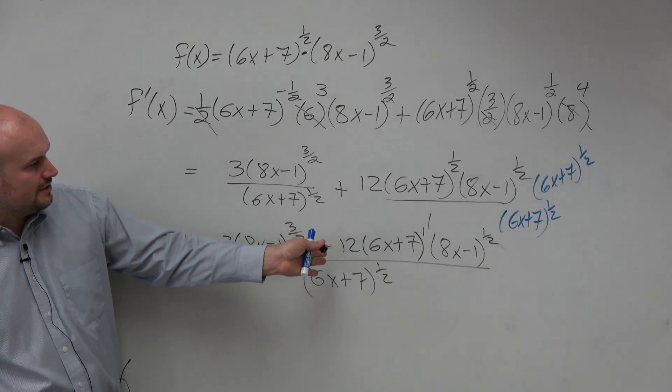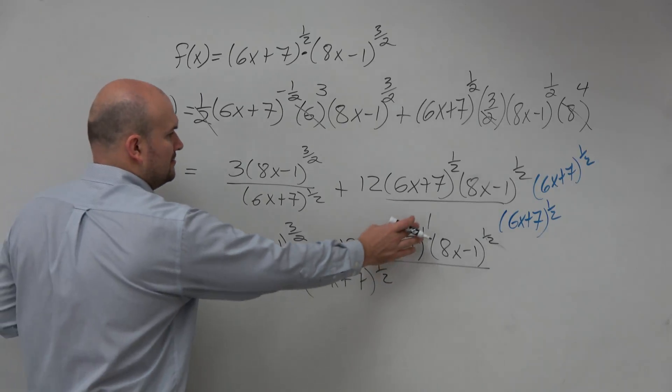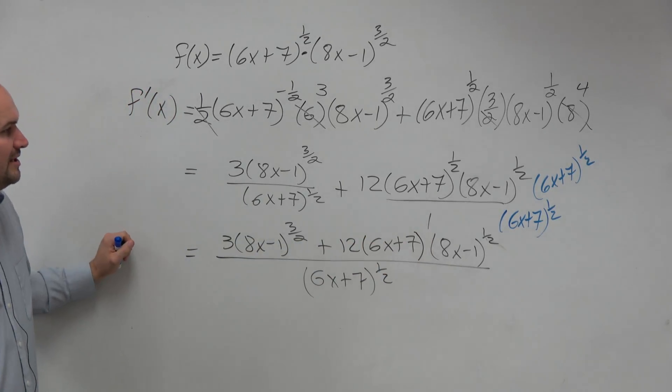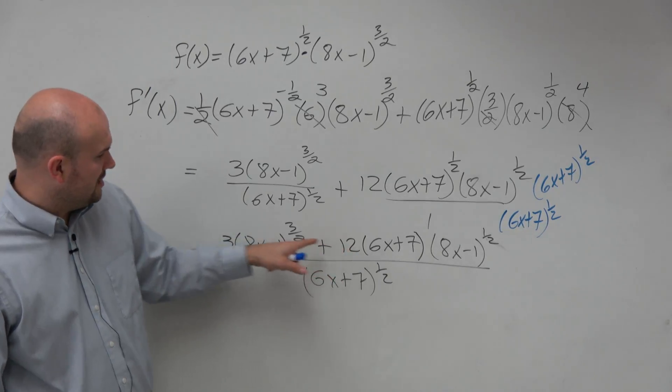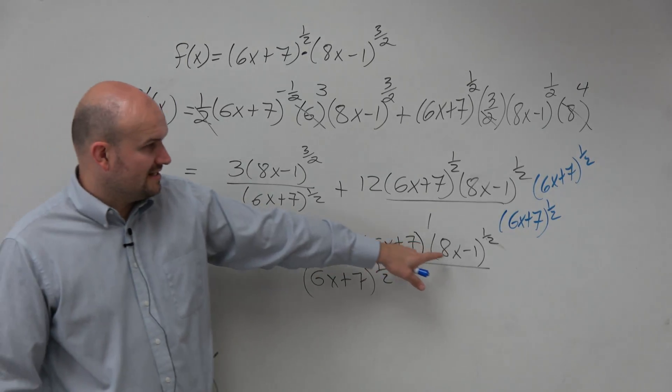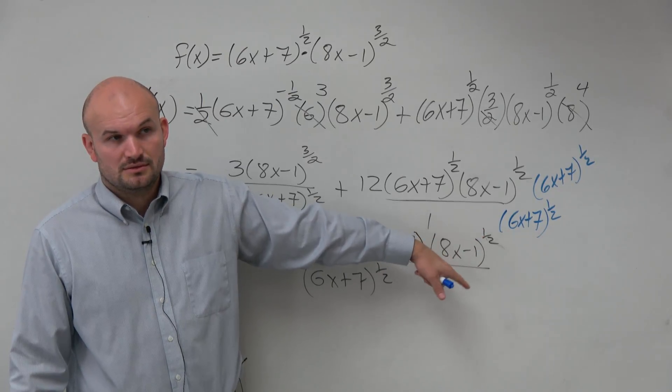Now, you could distribute that. I'm not really sure if that's going to be simplifying anything. So another thing we could do is look into factoring out a 3 as well as an 8x to the 1/2.